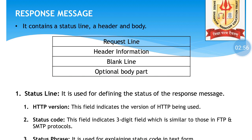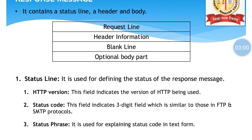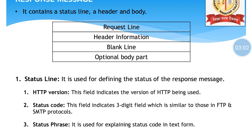The status code field indicates a three-digit code, similar to those in FTP and SMTP protocols. Whatever the status is for any response message, it is translated into a code for machine-to-machine communication. The status phrase explains the status code in text form — so status phrase is for users, and status code is for machines.